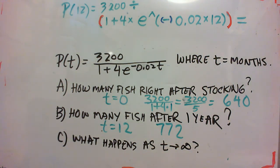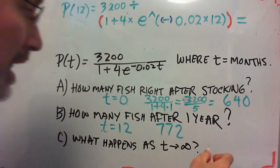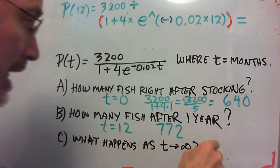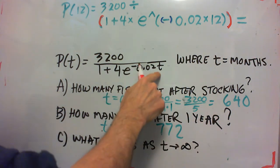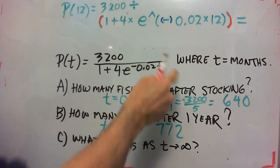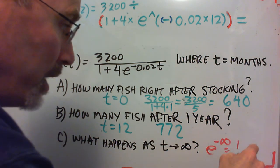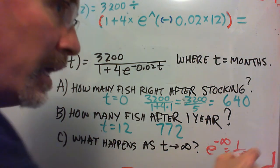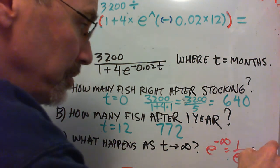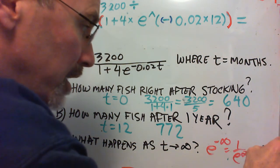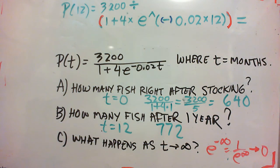Okay, last question. What happens as t goes to infinity? Well, as t goes to infinity, that quantity e to the negative 0.02 times infinity becomes e to the negative infinity, which is 1 over e to the infinity. And that is going to approach 0.